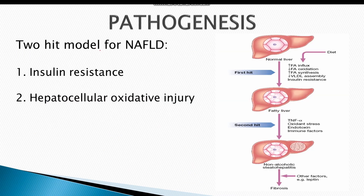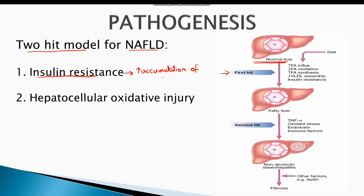The exact pathogenesis of non-alcoholic fatty liver disease is unknown, but the widely accepted model is the two-hit model. In this model, a normal liver is hit by the first impact, which is due to insulin resistance. This insulin resistance results in increased accumulation of lipids inside the hepatocytes, resulting in steatosis. After the first hit, the normal liver progresses into a steatotic or fatty liver, where the hepatocytes are laden with excessive lipids.